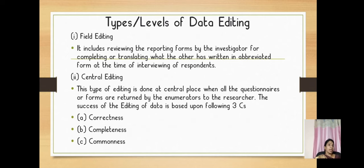Next, we have types or levels of data editing. First type we have field editing, which includes reviewing the report forms by the investigator for completing or translating what the other has written in abbreviated form at the time of interviewing respondents. Central editing is done at a central place when all the questionnaires or forms are returned by the enumerators to the researcher. The success of editing is based upon following three C's: correctness, completeness and commonness.